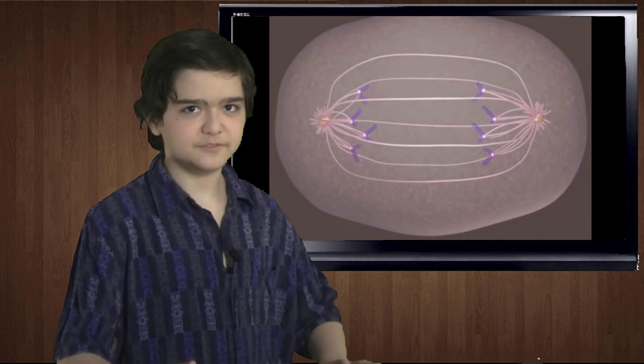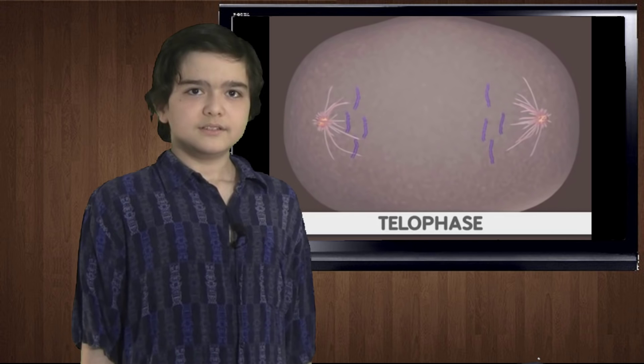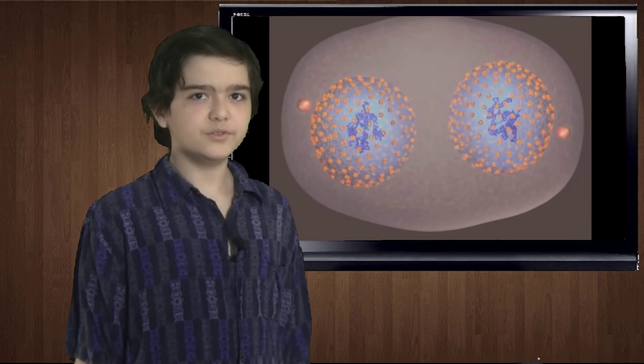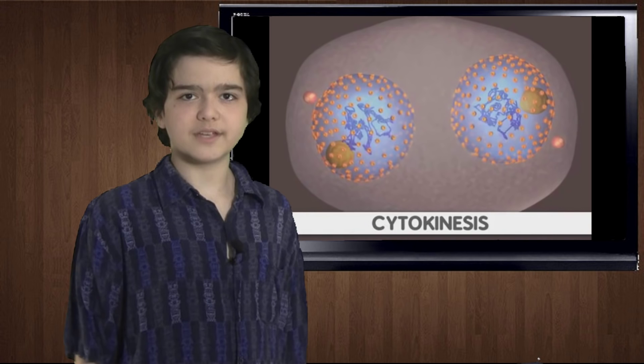The telophase is when the sister chromatids on either side get their own nuclear envelope, creating two nuclei. Then both sides of the cell are split in two, creating two new cells. This happens over and over again, until you have your tail, part of liver, or many other things back again.